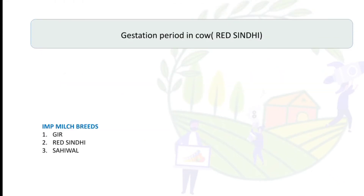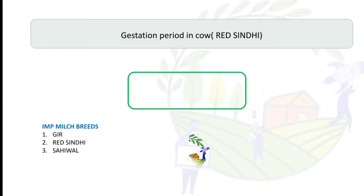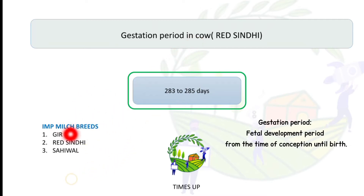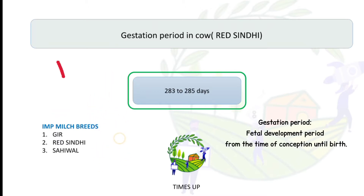The gestation period in Red Sindhi is 283 to 285 days. The important milk breeds in cow are Geer, Red Sindhi, and Sahiwal. You need to remember these important milk breeds, and the gestation period applies to Geer, Red Sindhi, and Sahiwal.